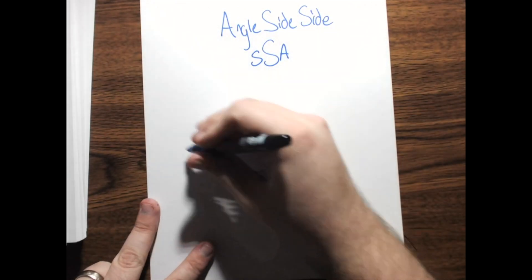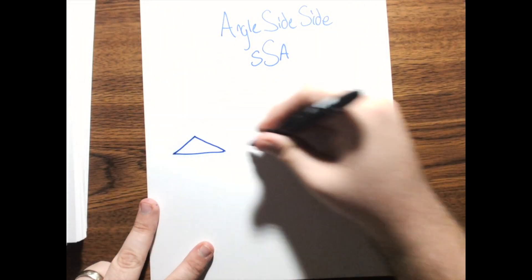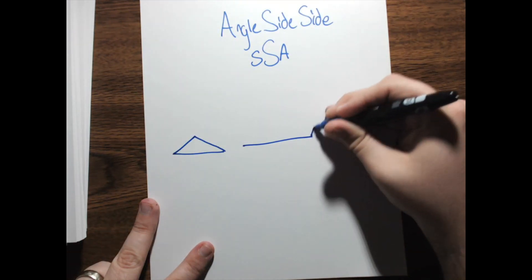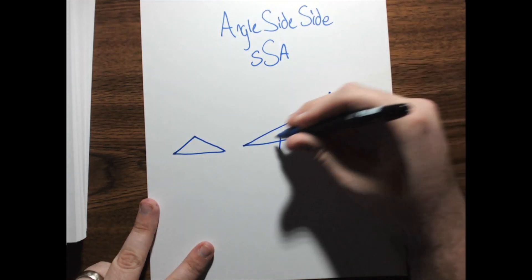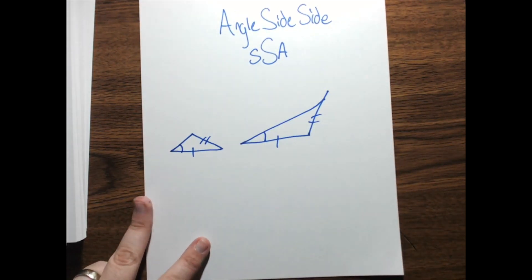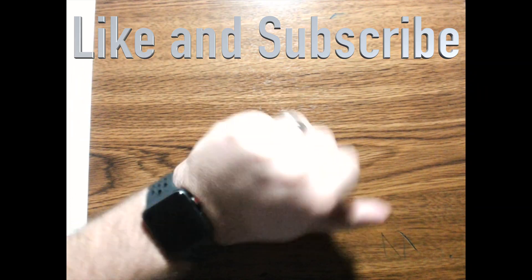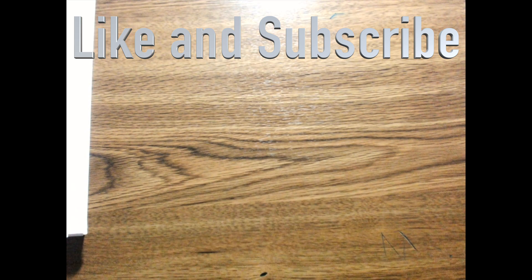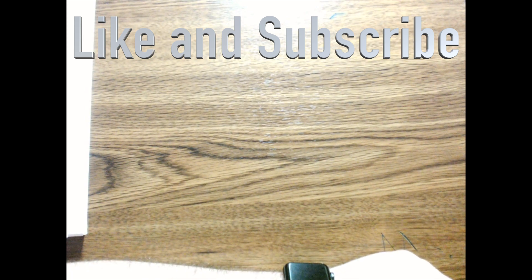So, when we look at angle, side, side. They just don't work. And, that's the idea. So, that's triangle congruence. Apparently, I can't thumbs up very well from this. But, that's triangle congruence. Thank you very much. Have a great day.